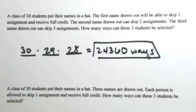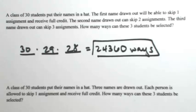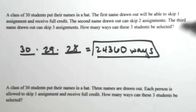Let's change this scenario a little bit. We still have our 30 names put in a hat. Three names are still drawn out, but each person is allowed to skip one assignment and receive full credit. The difference between this problem and the previous one is that in the previous problem,